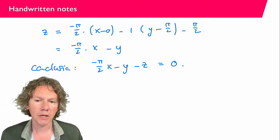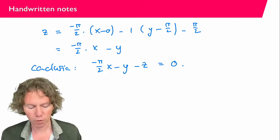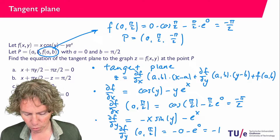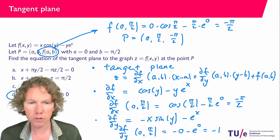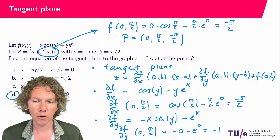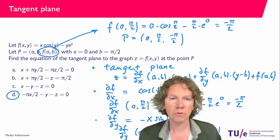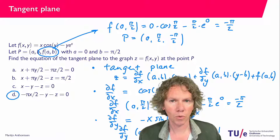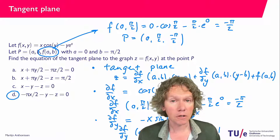So the answer is minus pi over 2 times x minus y minus z equals 0. Going back to the previous slide, we can see that answer D is the correct answer for this question. That wraps up this video — I'll see you in the next one.